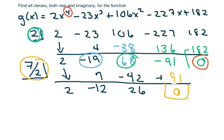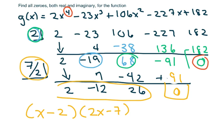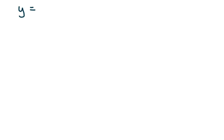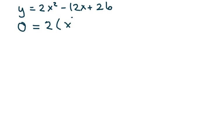These are our two zeros. When we write this in intercept form we have (x minus 2) and (2x minus 7). We still have the remaining quadratic to deal with, so on the next page we rewrite: y equals 2x squared minus 12x plus 26. Setting y to zero and factoring out the 2, I get x squared minus 6x plus 13.